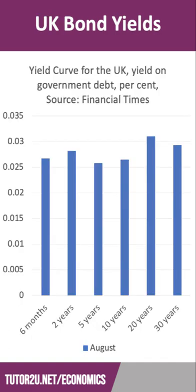So what about the UK? This is the data for August, showing the yield on the different bonds — from 6 months to 2 years, 5 years, 10 years, 20 years, and 30 years. That's a long-dated security. And typically what normally happens is that the longer you borrow for, the higher the rate of interest — and that was certainly the case in August.